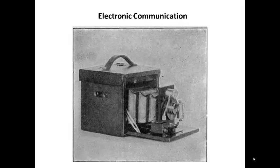In 1888, George Eastman patented the Kodak film camera. Images could now be reproduced instead of just painted or drawn. Using natural or artificial light through a lens, images could be recorded on film and printed.